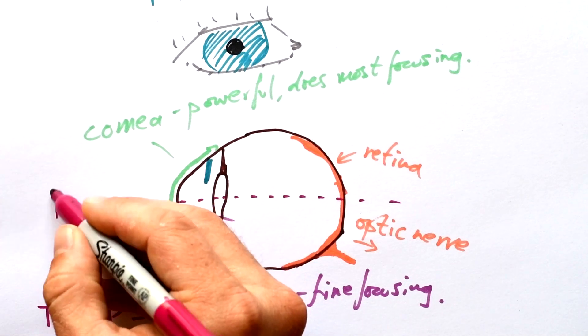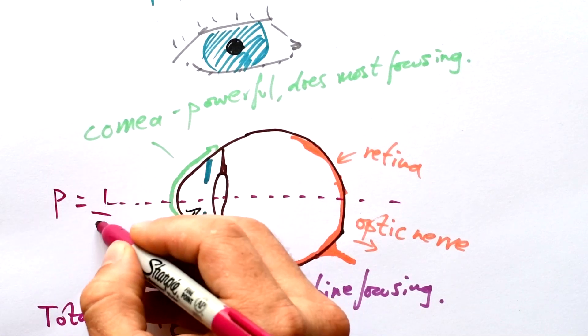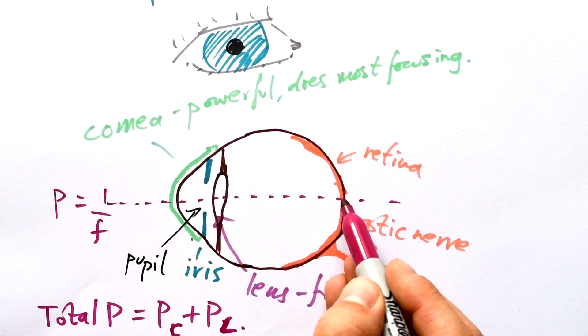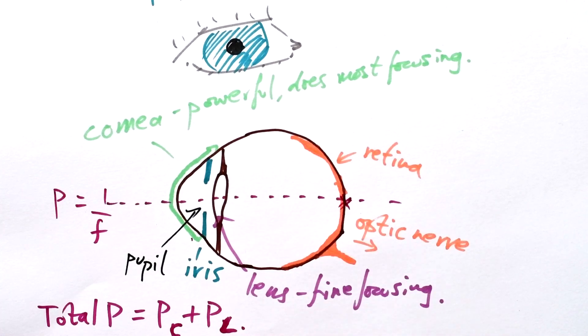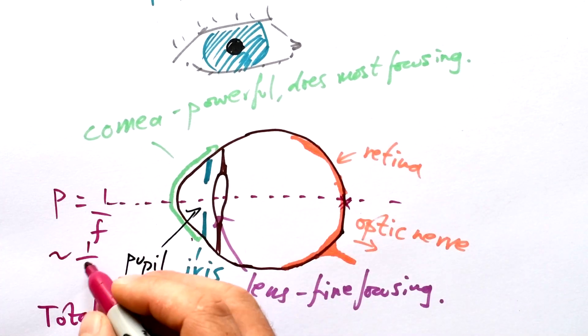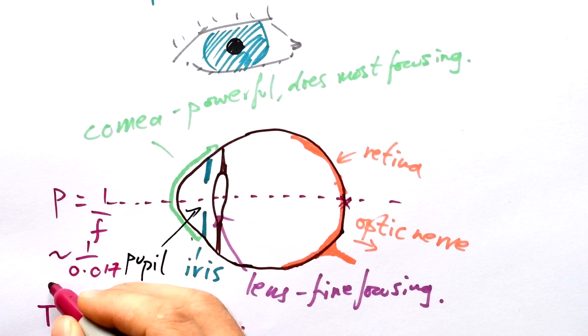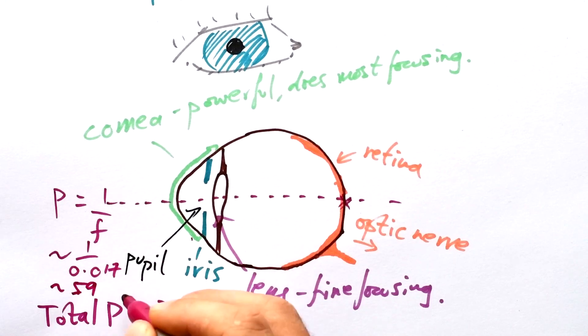If you remember power is given by one over the focal length. Now the focal length is the distance from the lens to the principal focus point, which hopefully is at the retina. This distance here is roughly 1.7 centimeters. So if we do 1 divided by 0.017, that gives us a power of about 59 and that's measured in diopters.